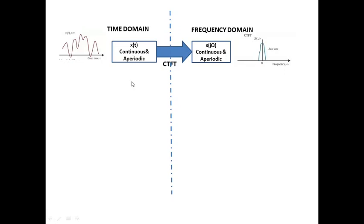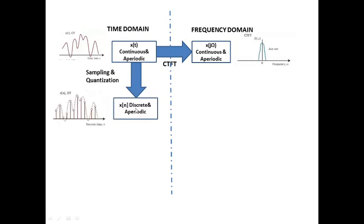The process for converting a time domain signal into a discrete time signal uses sampling and quantization. When you do sampling and quantization you get a discrete signal. When you perform sampling and quantization on this signal, you get a discrete signal x(n), and the nature of this signal will be aperiodic since the original signal was aperiodic.